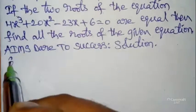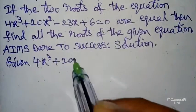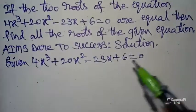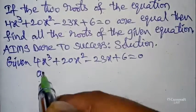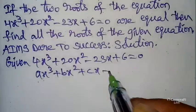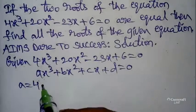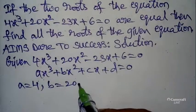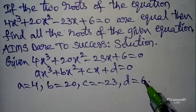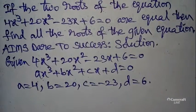The given equation is 4x³ + 20x² - 23x + 6 = 0. This is in the form ax³ + bx² + cx + d = 0, where a = 4, b = 20, c = -23, d = 6. The highest degree is 3, so we can take three roots.